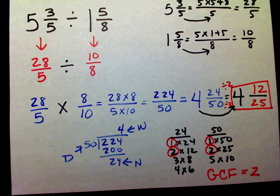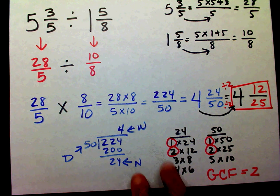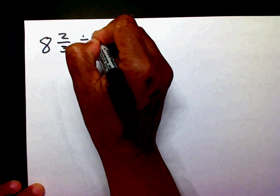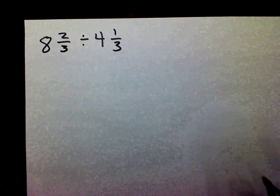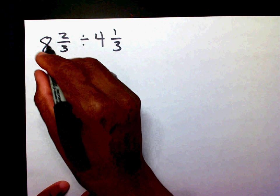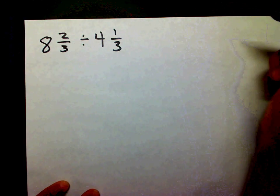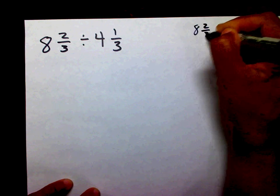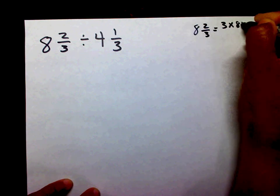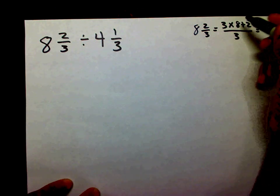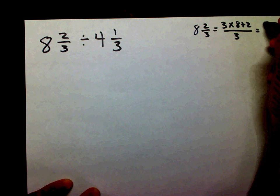Let's do one more. Eight and two-thirds divided by four and one-thirds. First thing I need to do is change these mixed numbers into improper fractions. Over here on the side: eight and two-thirds equals three times eight plus two over three. Three times eight is twenty-four plus two is twenty-six-thirds.